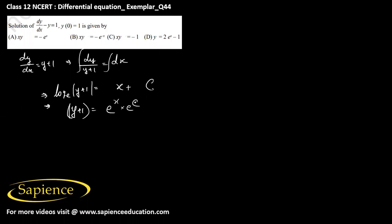So e raised to c I can write as some constant k, suppose. So this will be y equals k times e power x minus 1.